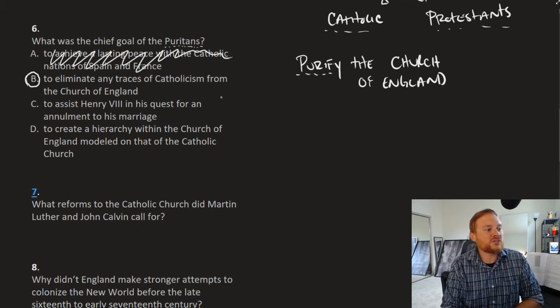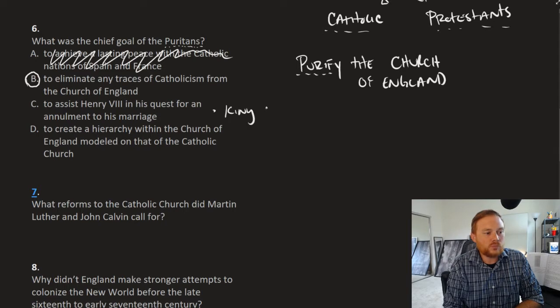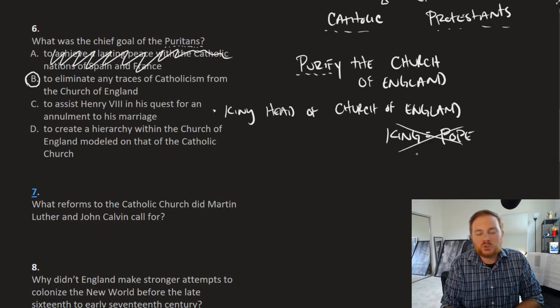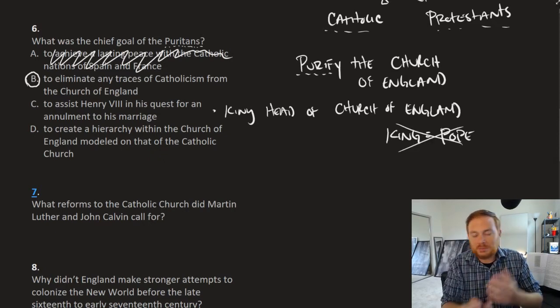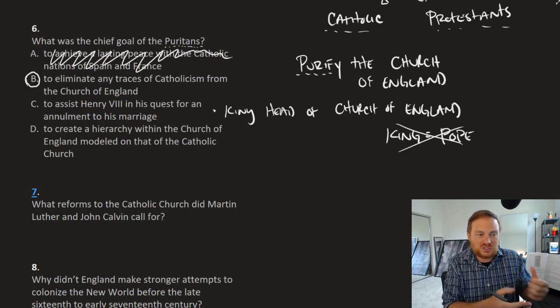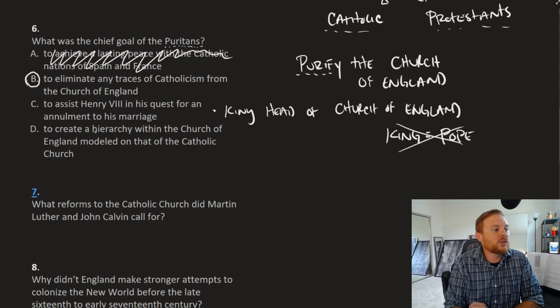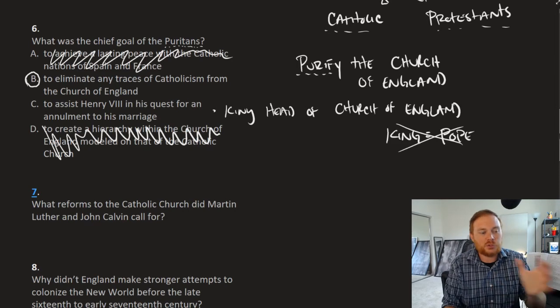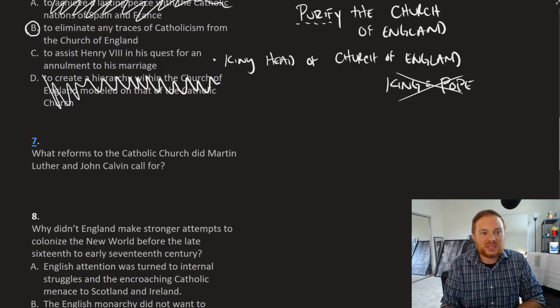To assist Henry VIII in his quest for an annulment to his marriage. Again, cleansing the Church of England. The king was the head of the Church of England. In the eyes of the Puritans, they pretty much said, the king is too much like the pope. And for that reason, we need to reform the Church of England even more. It makes no sense just to break away from the Catholic Church and then instead of just having the pope be in charge of it, you just say the king's in charge. It's essentially the same structure by a different name. Puritans didn't like that. To create a hierarchy within the Church of England modeled off the Catholic. Again, no, Puritans are anti-Catholic. They would want the exact opposite. They want it to be less Catholic.